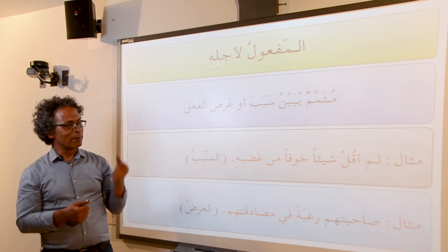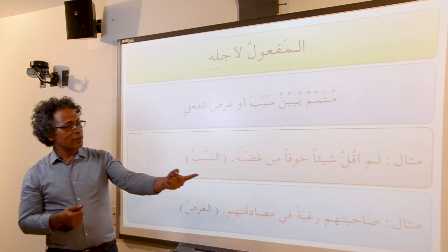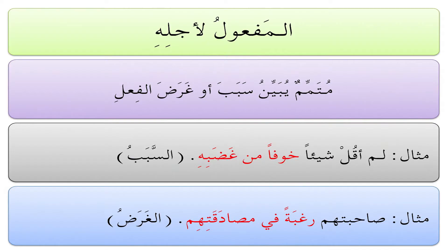So that's السبب. المثال الثاني: صاحبتهم رغبةً في مصادقتهم. Once again, صاحبتهم is the full sentence — I accompanied them. رغبةً — out of desire to befriend them. So what was the purpose of my accompanying them? It was actually to befriend them.